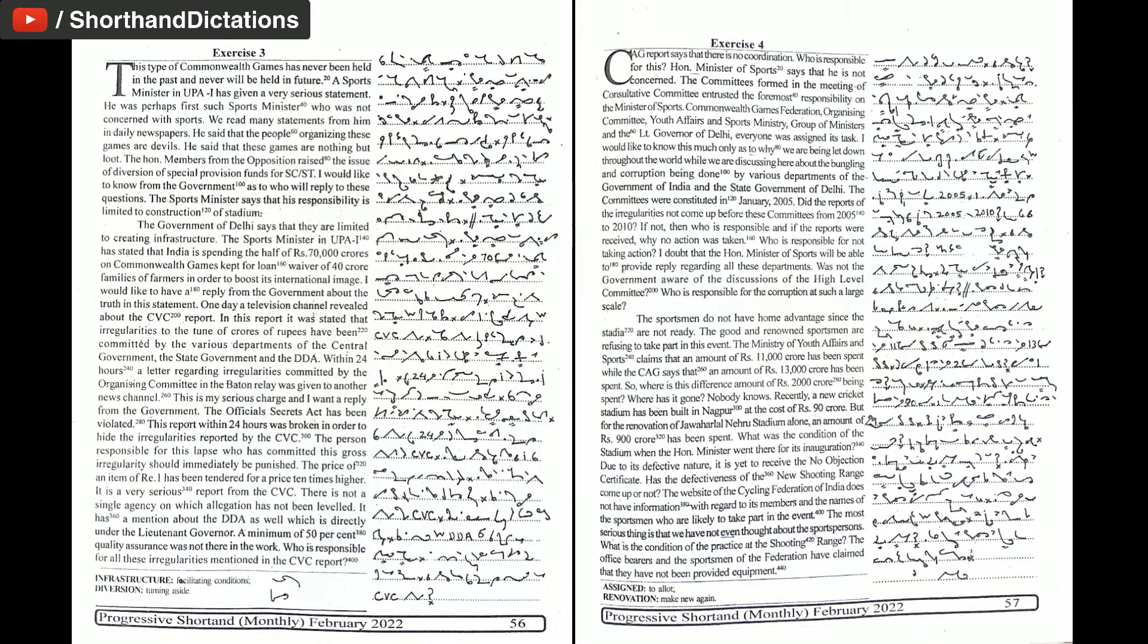It has a mention about the DDA as well which is directly under the Lieutenant Governor. A minimum of 50% quality assurance was not there in the work. Who is responsible for all these irregularities mentioned in the CVC report?